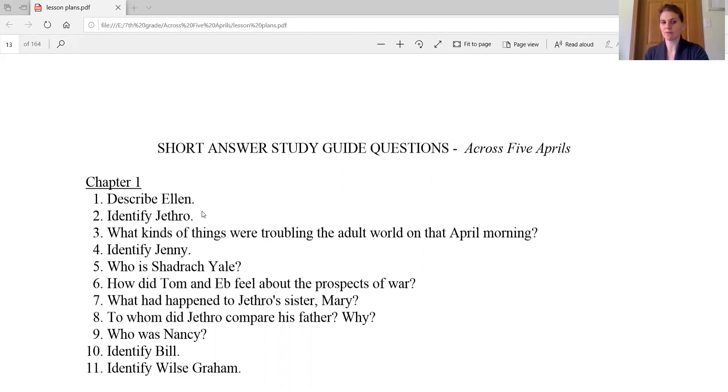So today we're going to pick up reading where we left off and that will lead us into the answer to number seven, which is what happened to Jethro's sister Mary. Remember Jethro has lots of siblings. It's going to be hard to keep track of all of them. Question eight, to whom did Jethro compare his father and why? Make sure both parts of that. Nine, who was Nancy? We started to get an answer to that. I believe it was his brother John's wife, but we're going to get a little more information as well. Identify Bill. So we're going to talk about who Bill is and then also identify Wils Graham. So most of these people are all family members. A lot of them are brothers and sisters. Some though are cousins. And then we have that one oddball Shadrach Yale, who is the schoolmaster and the school is actually on their property, Matt Crichton. We did learn that Ellen, Jethro's mother, is married to Matt Crichton and the schoolhouse is actually on their property.